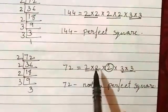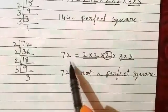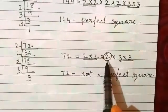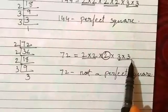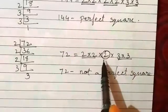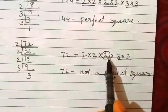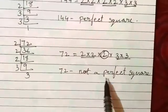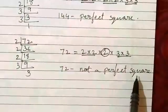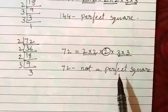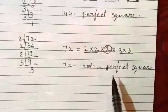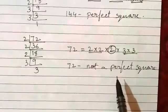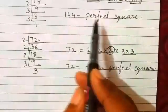Now consider another number, 72. The prime factorization of 72 is 2 × 2 × 2 × 3 × 3. Here we can see that 2 is not in pairs. Therefore 72 is not a perfect square. So perfect squares are numbers that can be expressed as a product of pairs of equal prime factors.